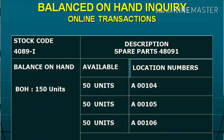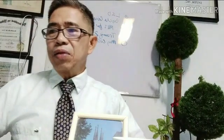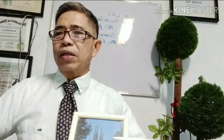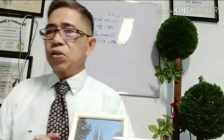In item inquiry, if the end user wants to know the balance on hand or status of a certain commodity, they enter the item code and automatically the item description is shown, including the balance on hand, unit of measure such as kilograms, and the different locations. For example, location AO1 has 3,000 kg, AO2 has 400 kg, and AO3 has 300 kg, totaling 1,000 kg.